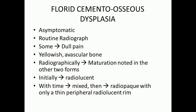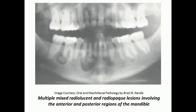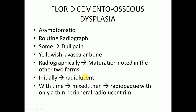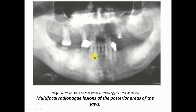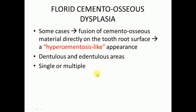Florid cemento-osseous dysplasia involves mostly the four posterior quadrants, as seen in this image — first, second, third, and fourth quadrant. Some cases may show fusion of cemento-osseous material directly on the tooth root surface, giving a hypercementosis-like appearance. It can be present in dentulous or edentulous areas and may be single or multiple.